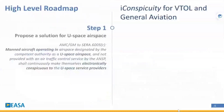Let's start with the roadmap and step 1. A brief description of the requirement from CERA 6005C. The rule says: manned aircraft operating in airspace designated by the Competent Authority as USPACE airspace and not provided with an air traffic control service by the ANSP shall continuously make themselves electronically conspicuous to the USPACE service providers.